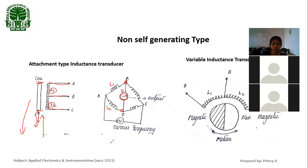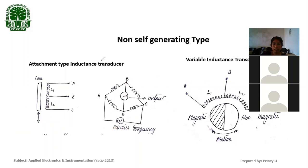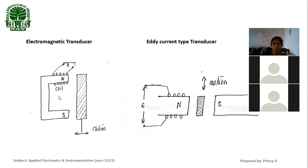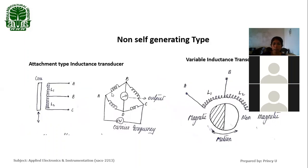This inductance-type transducer produces an output voltage proportional to the motion to be measured. A carrier frequency voltage is needed — that means we apply an input voltage as the supply to produce an output voltage on the galvanometer. Previously we studied the self-generating type, which uses permanent magnets and needs no external energy source. But here we need a Wheatstone bridge arrangement, and the Wheatstone bridge requires an external supply to work. The change in output voltage in the bridge is proportional to the motion of the core.